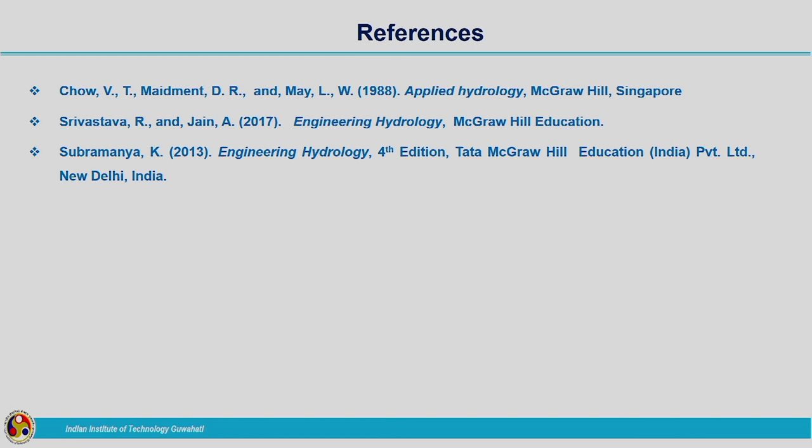Whatever be the required duration, you can find the unit hydrograph by making use of the S hydrograph technique. If the required duration is NDRs from a DR unit hydrograph, whether N is an integer or fraction, we can develop the NDR unit hydrograph using the S hydrograph principle. If N is an integer, it can also be done easily using the principle of superposition. These are the different types of problems related to S hydrograph and unit hydrographs of different durations. You can get many exercise problems from the textbooks; try to solve these to make the concepts very clear. Thank you.